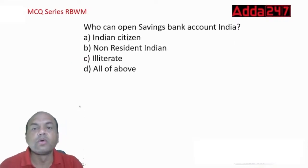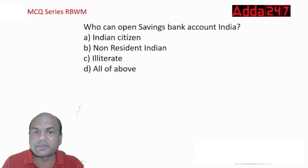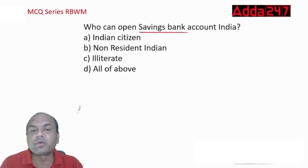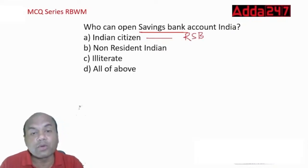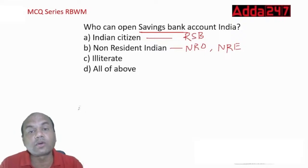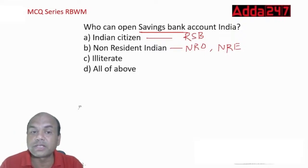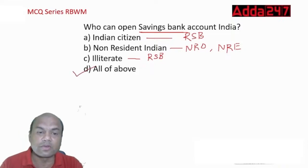Who can open a savings account in India? Indian citizens (Resident Savings Bank account), NRIs (NRO or NRE accounts), and illiterates — the answer is D, all of the above. Children above 10 years can also open a savings account independently; below 10, a guardian is required.